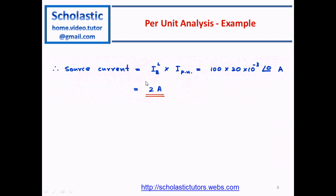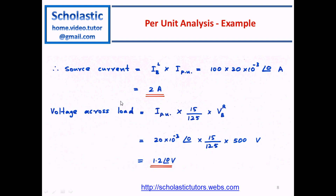To find the voltage across the load, we use the base voltage at the right-hand side times the per unit voltage. The per unit current times the per unit impedance gives the per unit voltage, and multiplying by the base voltage gives the actual load voltage. This equals 1.2∠0° volts — the solution to this per unit analysis problem.